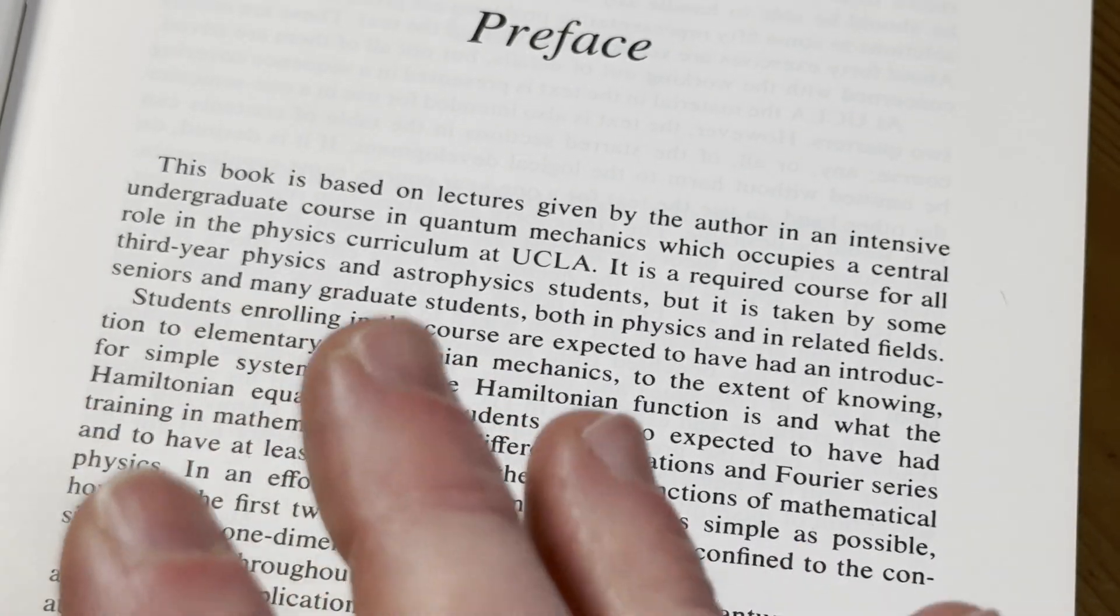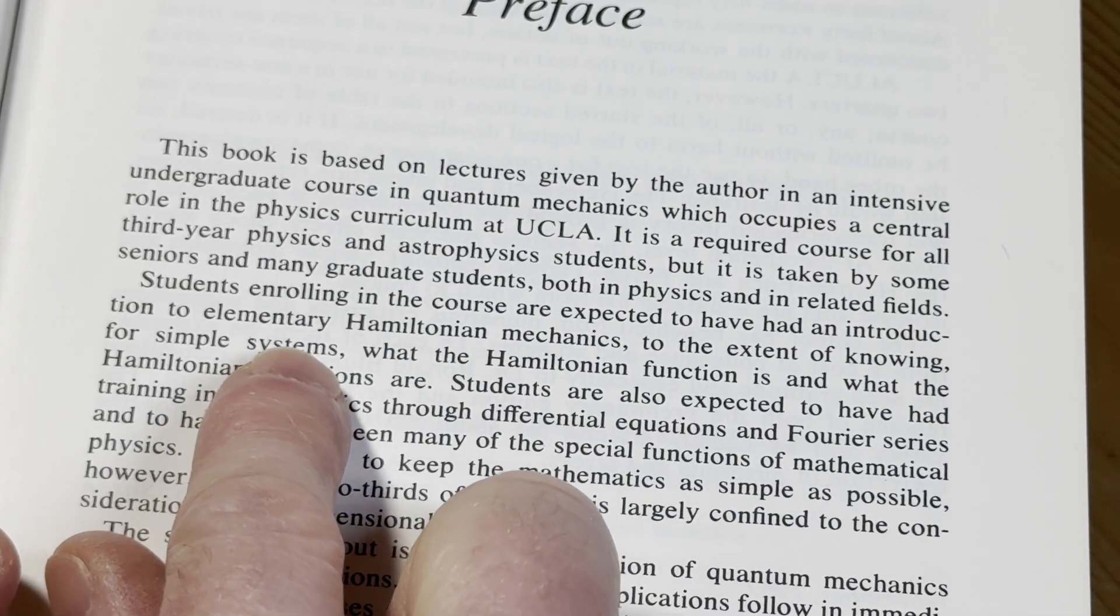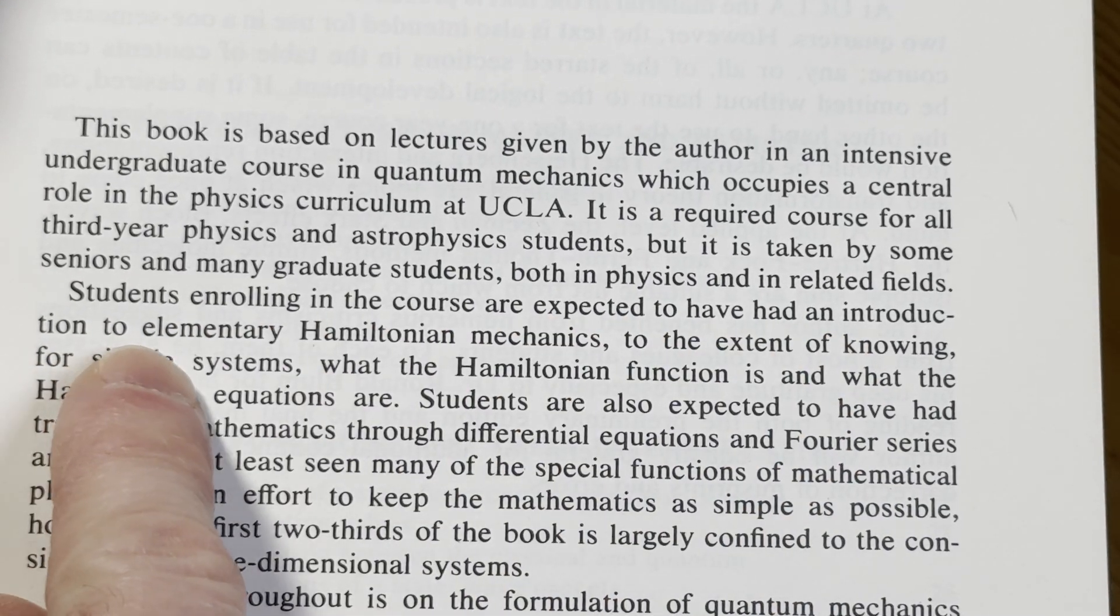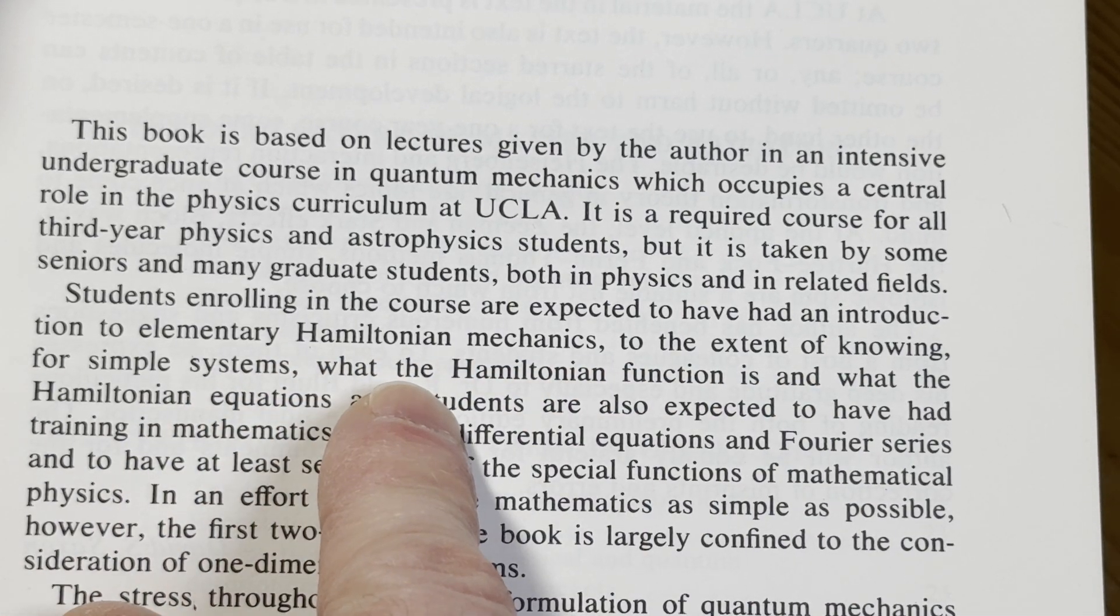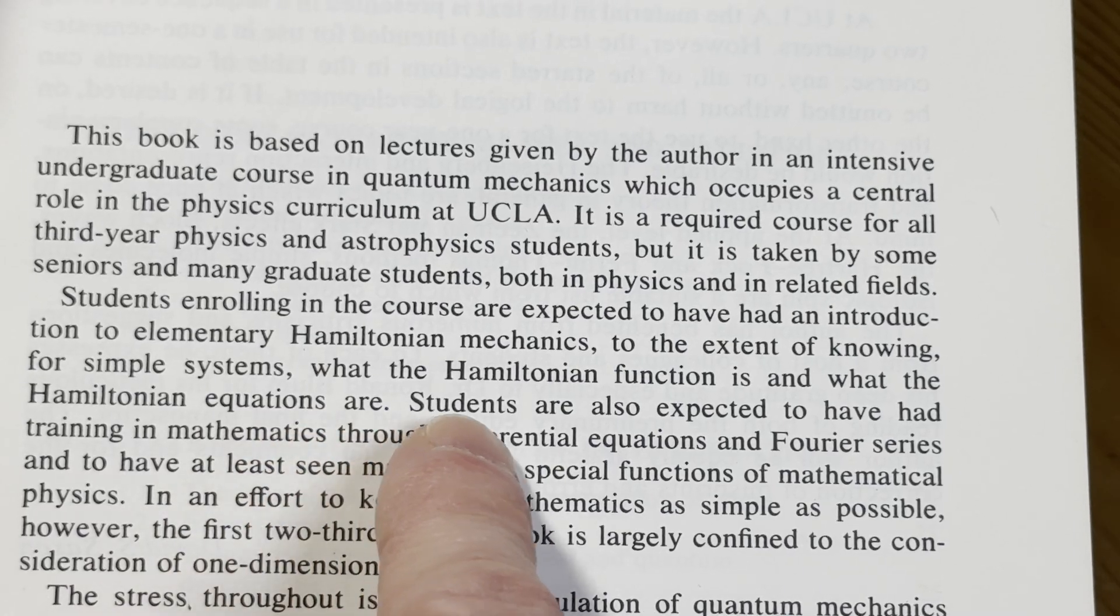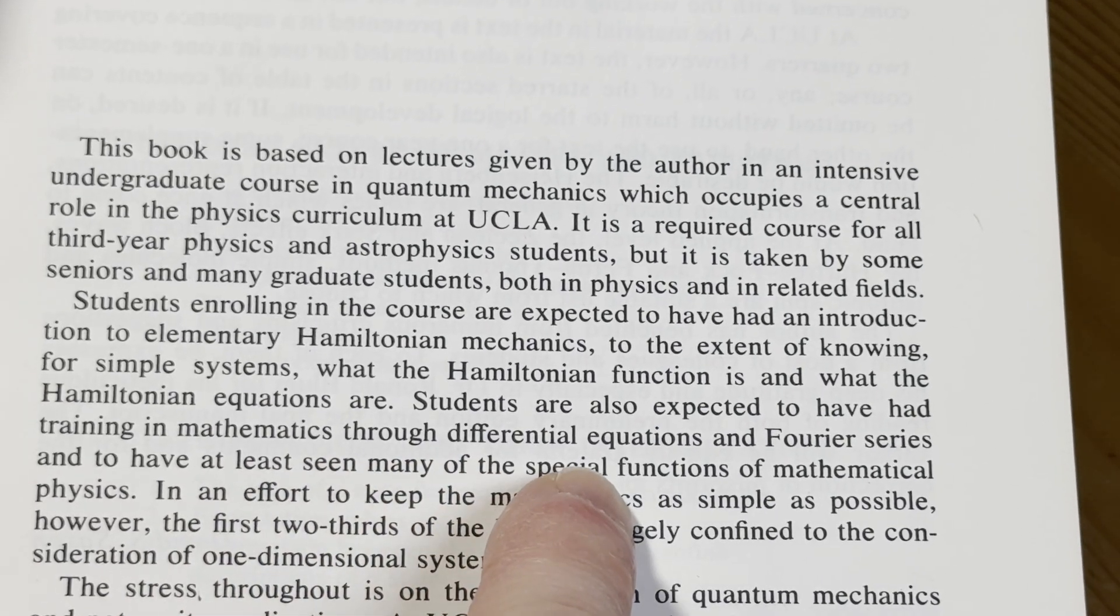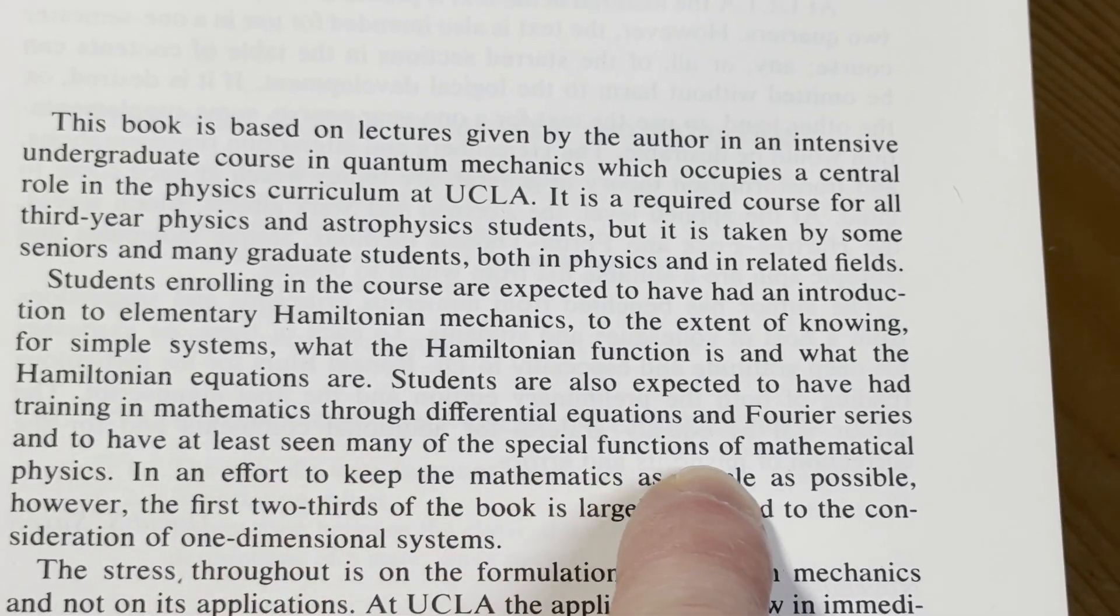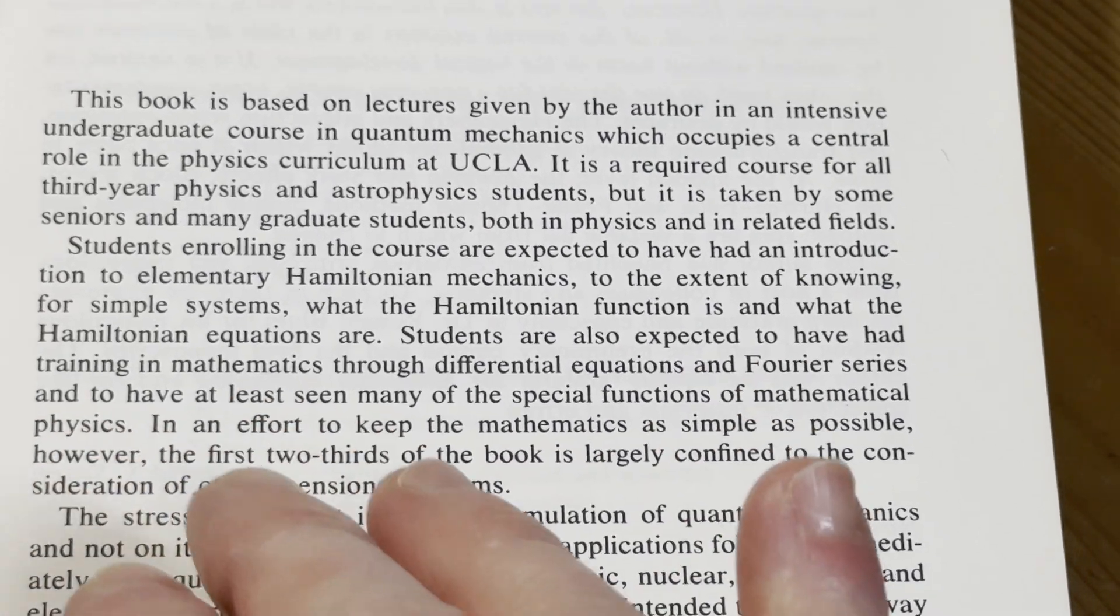So it's so hard that grad students take it. So in physics, this is hard. I just want to emphasize that. So even though this is a book that you can use to learn on your own, a person can pick up this book and in theory learn, it's tough. And then here is what is needed in order to learn this material. Students enrolling in the course are expected to have had an introduction to elementary Hamiltonian mechanics to the extent of knowing for simple systems, what the Hamiltonian function is and what the Hamiltonian equations are.